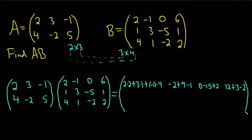Now let's go to the second row. We're working on the entry in the second row, first column. So we use the second row of A and the first column of B: 4 times 2 is 8, negative 2 times 1 is negative 2, and 5 times 4 is 20.